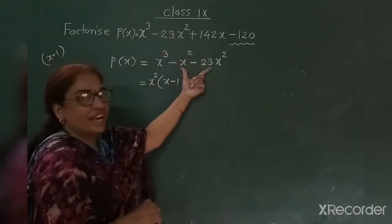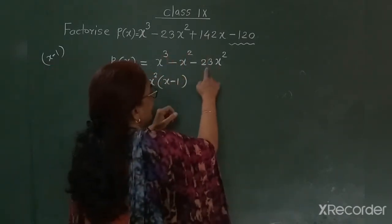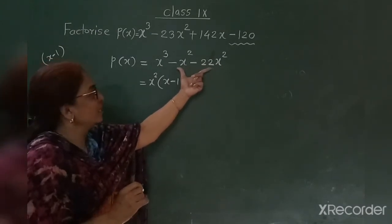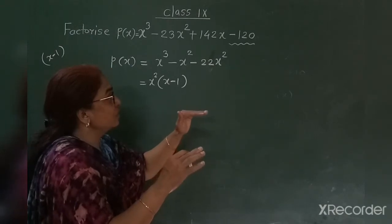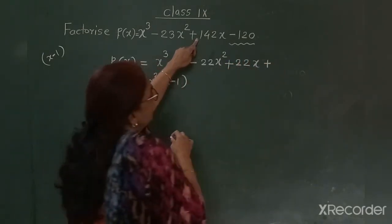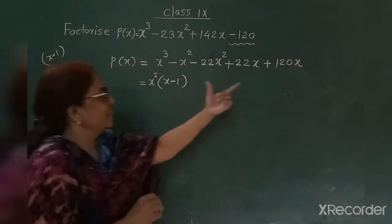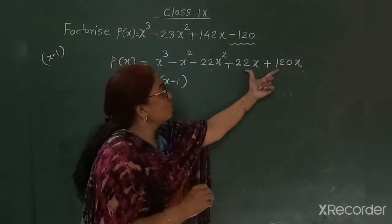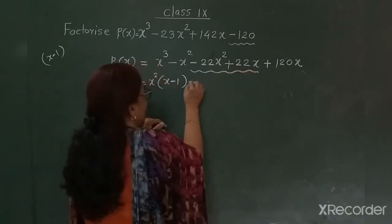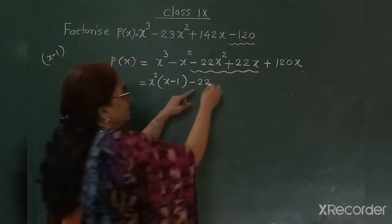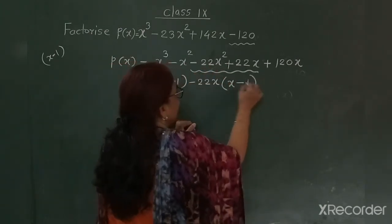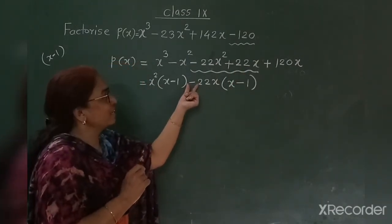So I split the second term. Now for the third term: I need 22 here. So I split 142x as plus 22x plus 120x — the value remains 142x. I took 22 because 22 appears above. From those two terms, I can take negative 22 outside, and x squared and x remain, leaving x minus 1 inside the bracket. The minus sign comes outside, so it becomes minus 1 inside.